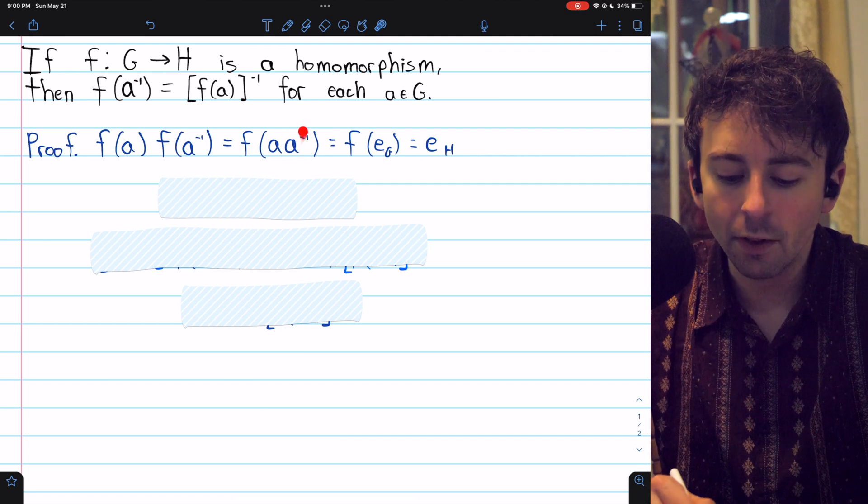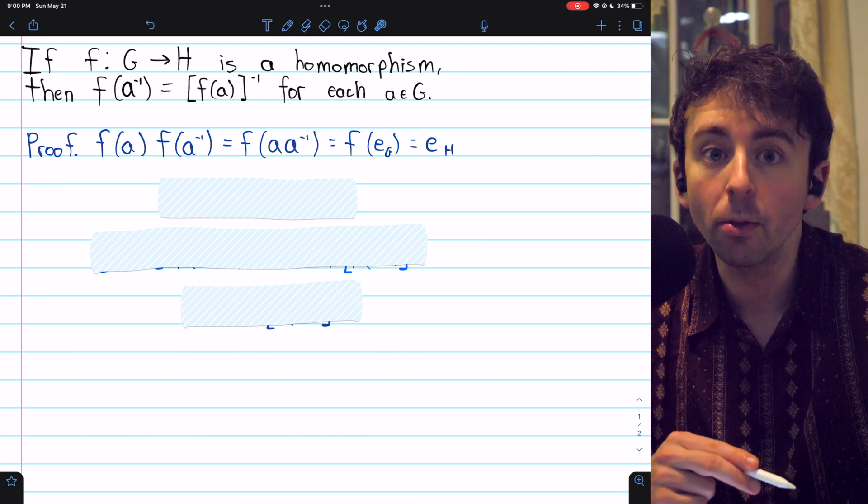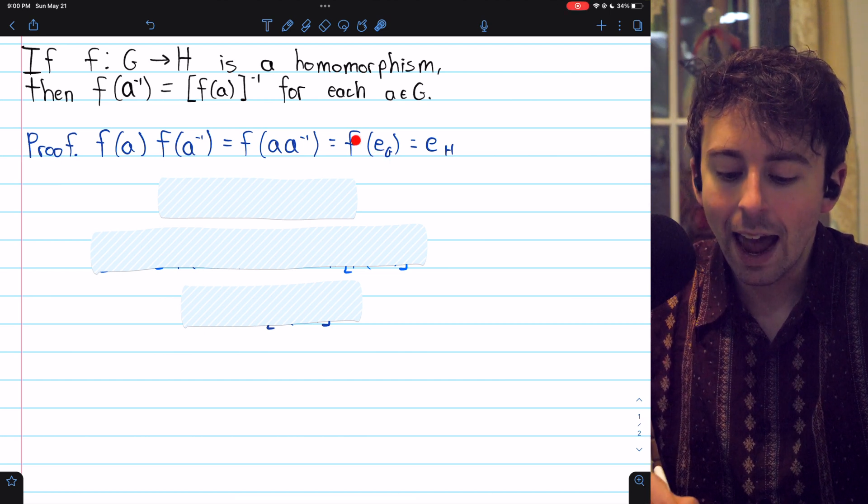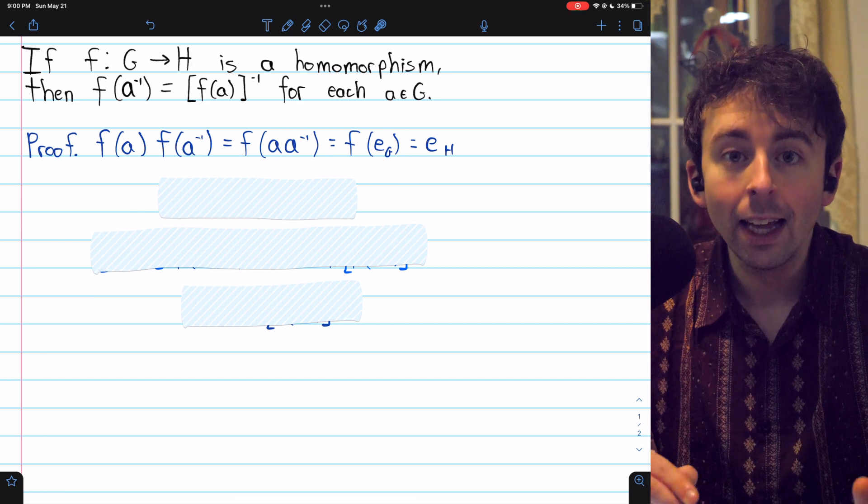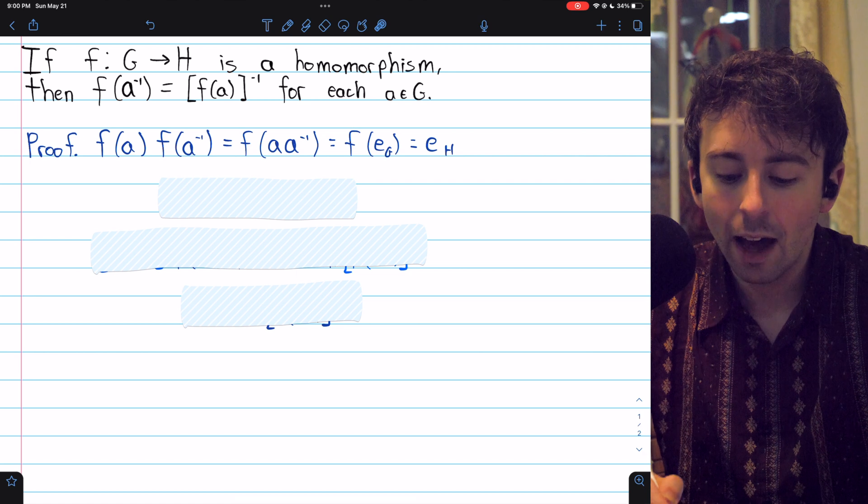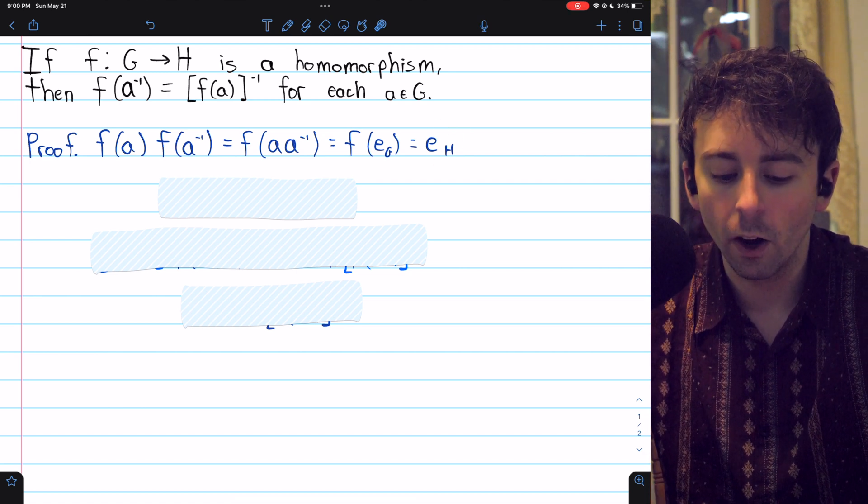a times a inverse, of course, is just the identity element of G, because a and a inverse are from G. We might call that identity just e_G. And then f(e_G), like we said, homomorphisms map identities to identities, so f(e_G) is just the identity of H, which we could call e_H.